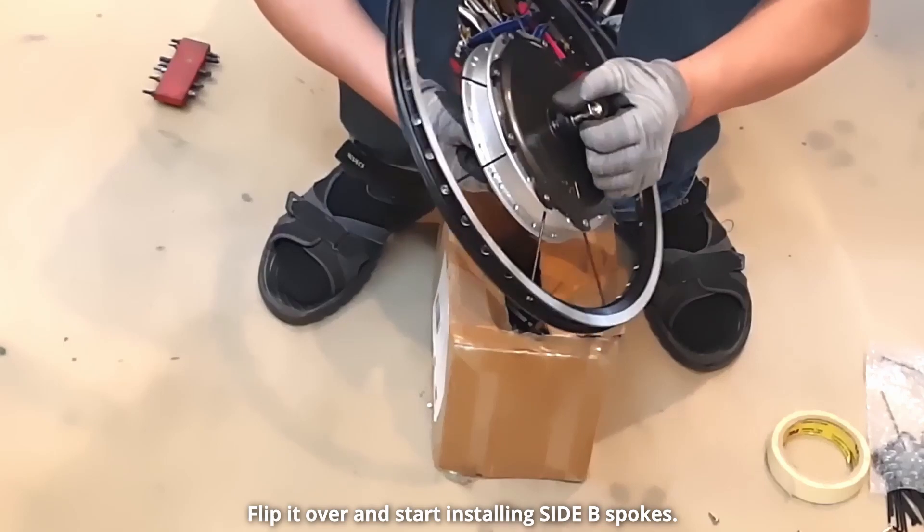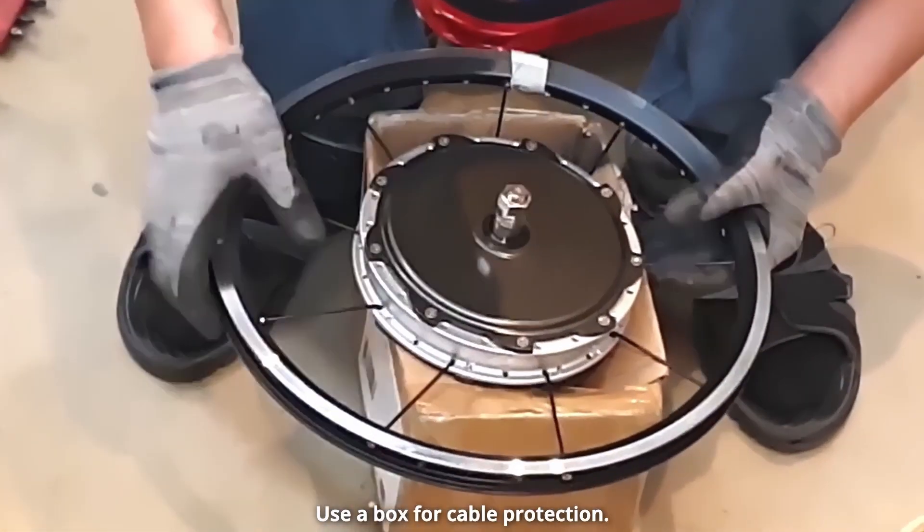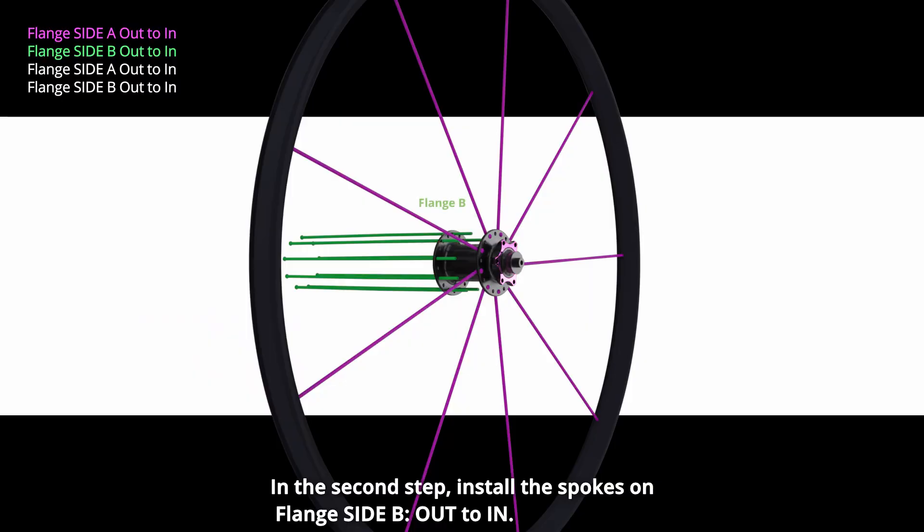The first pattern is complete. Flip it over and start installing side B spokes. Use a box for cable protection. In the second step, install the spokes on flange side B out to in.